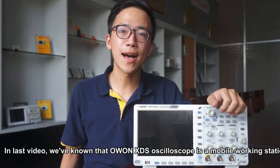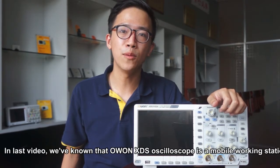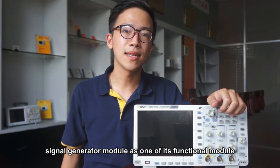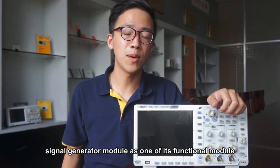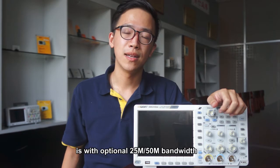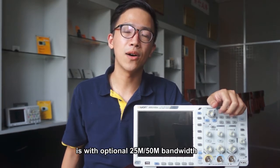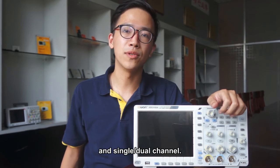In last video, we've known that OWON XDS oscilloscope is a mobile working station. Signal generator module as one of its functional modules is with optional 25 or 50 million bandwidth and single or dual channel.